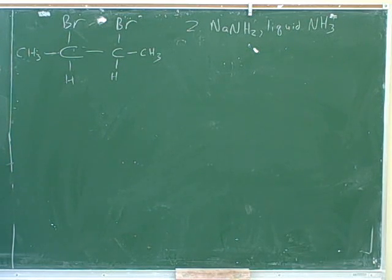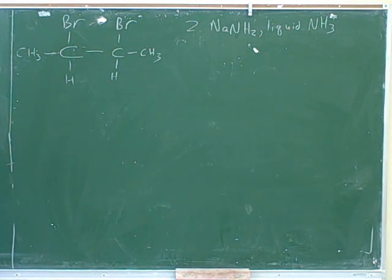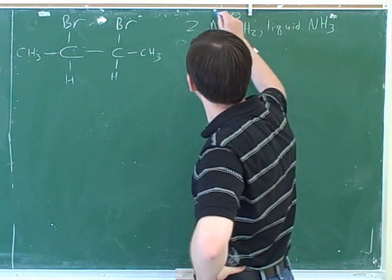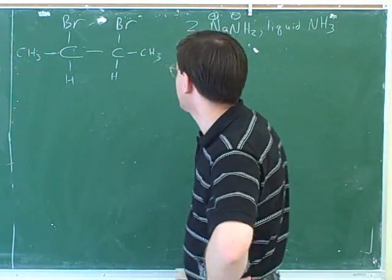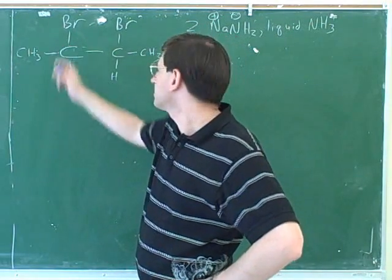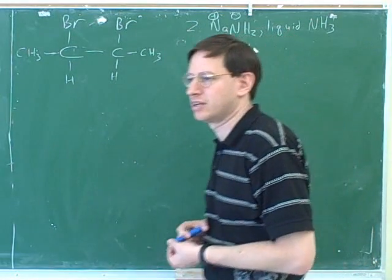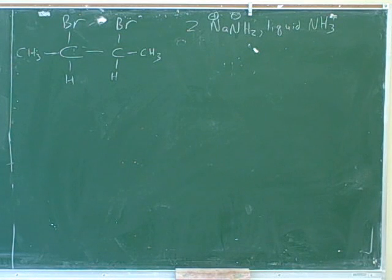We're going to make a triple bond — first a double bond, then a triple bond. The reaction is E2. These are the right reagents for an E2: NH2 minus is a strong base, and we have good leaving groups. So we can definitely do an E2 reaction. Let's remember the mechanism for E2.